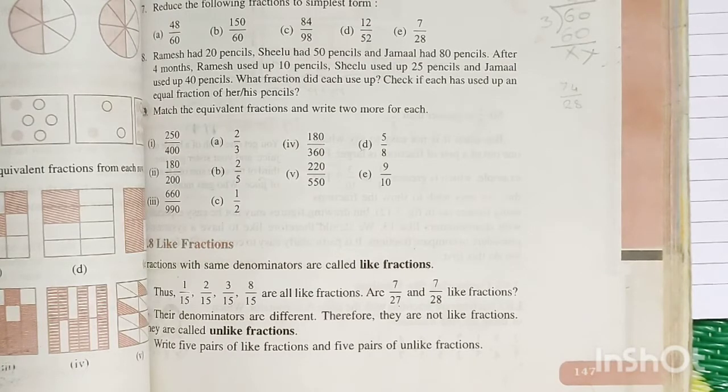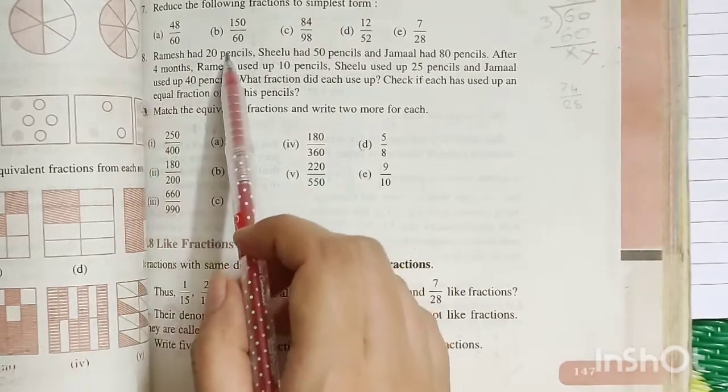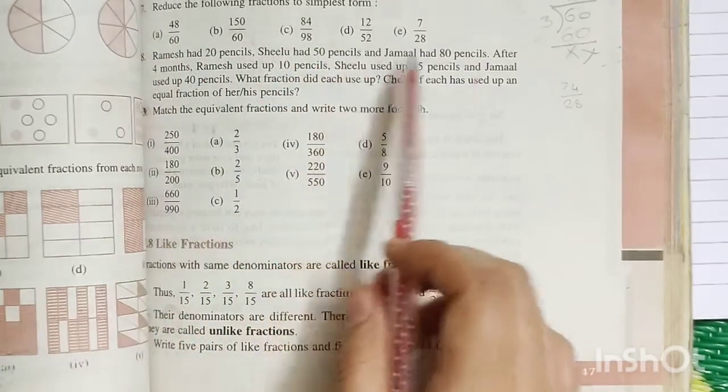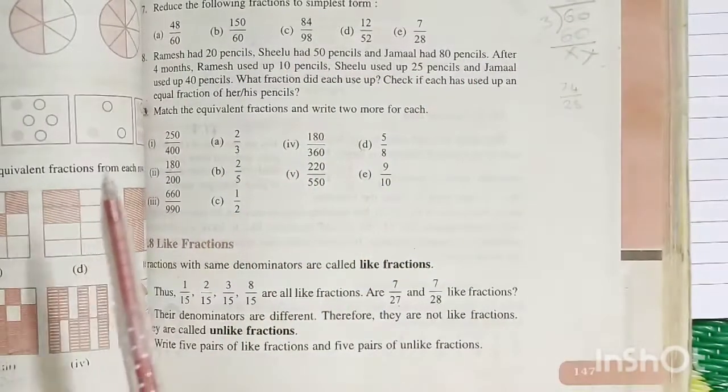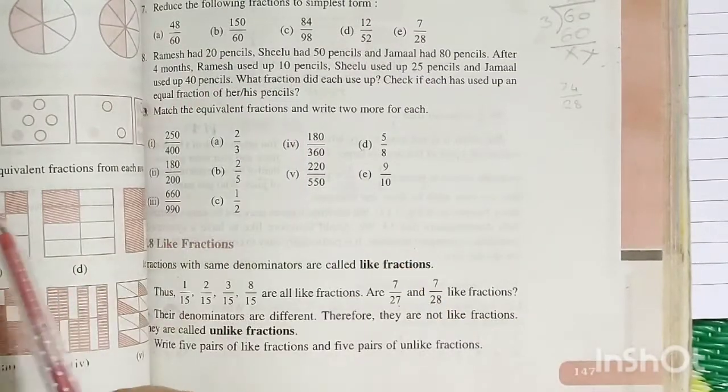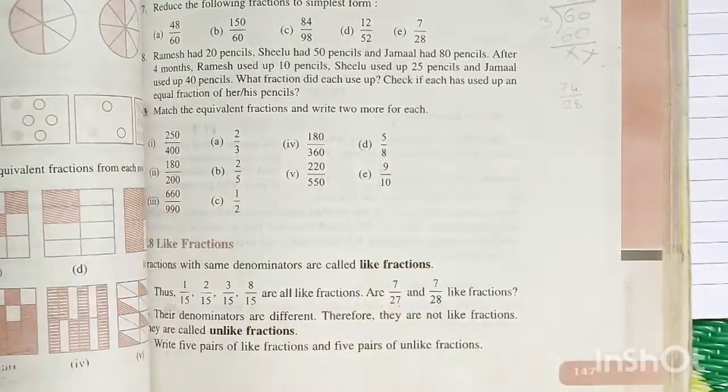Check if each has used up an equal fraction of his or her pencil. 4 months ago, Ramesh had total 20 pencils, Shilu had 50 pencils and Jamal had 80 pencils. 4 months later, Ramesh had 10 pencils, Shilu had 25 pencils, Jamal had 40 pencils.